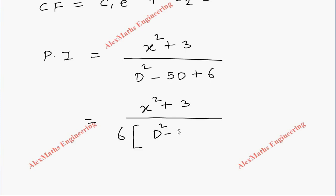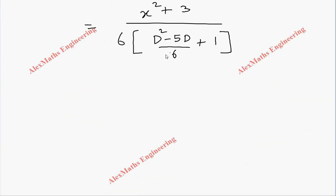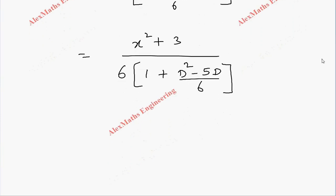Now I will rewrite this as first term 1, then we have (D² - 5D)/6. Let's carry this entire term to the numerator, so 1/6 we'll keep it here.